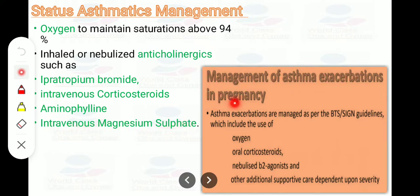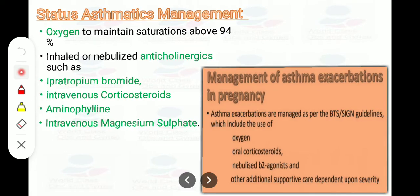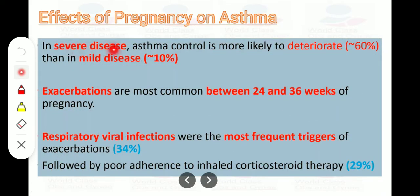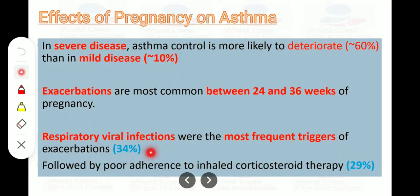Management of asthma exacerbation in pregnancy, as per BTS/SIGN guidelines, includes oxygen, oral corticosteroids, nebulized beta-2 agonist, and other additional supportive care dependent on severity. Regarding the effects of pregnancy on asthma: in severe disease, asthma control is more likely to deteriorate in 60% of cases versus 10% in mild cases. Exacerbations are most common between 24 to 36 weeks of gestation; viral infections are the most frequent trigger in 34% of cases, followed by poor adherence to inhaled corticosteroid therapy in 29% of cases.